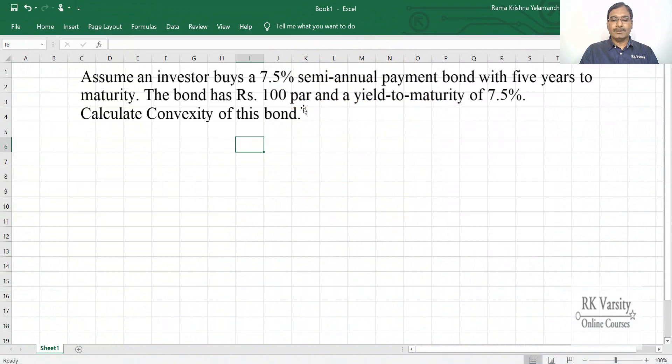Here is an example. This is a 5-year semi-annual coupon bond, the coupon payments of 7.5% and yield to maturity of 7.5% and the bond has a par value of Rs.100. First we look at the N, so this will have 10 coupon payments, that is 1, 2, then we drag this up to 10.